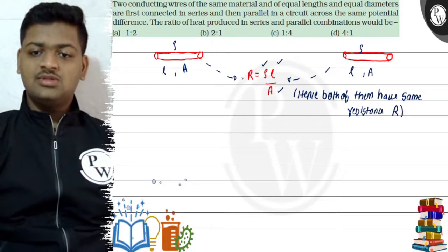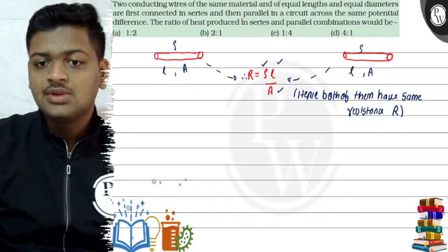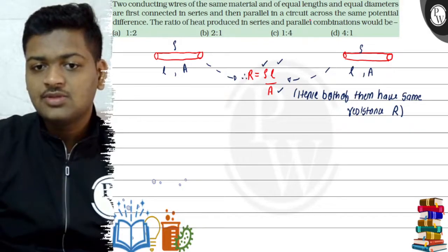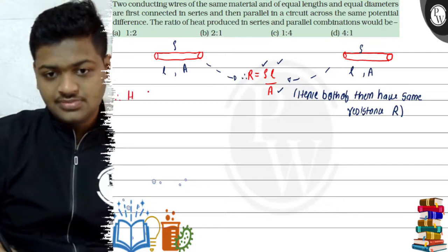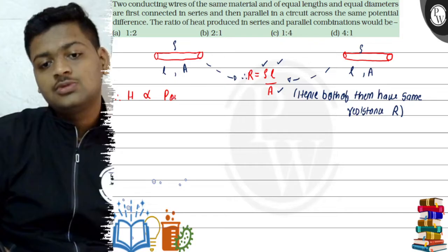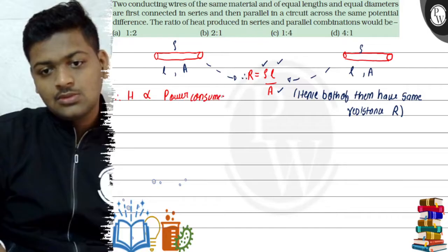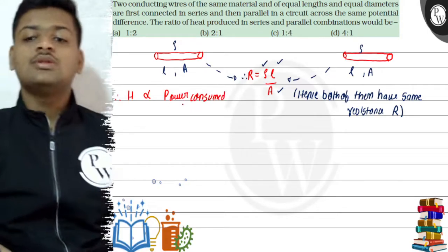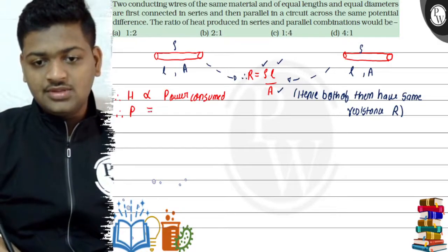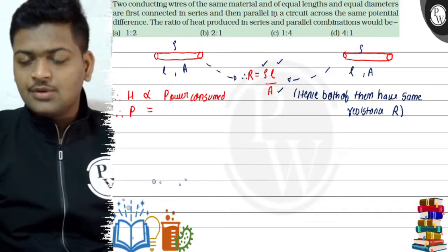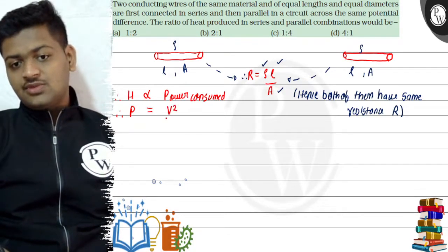Both wires have the same resistance R. Now we will solve this question. They are connected in series and parallel across the same potential difference. Heat produced H is directly proportional to power consumed, and since the same potential difference is given, the power formula to use is P = V²/R.